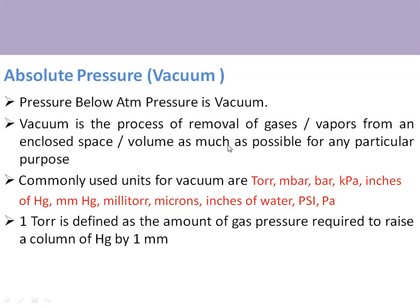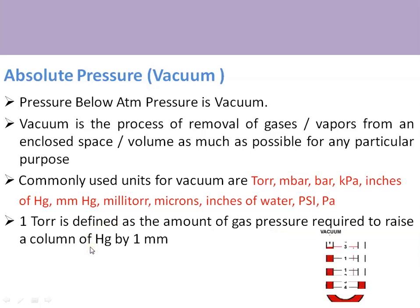Vacuum is the process of removal of gases or vapor from an enclosed space — such as containers, vessels, or furnaces — as much as possible for a particular purpose depending on the application. Commonly used units for vacuum are torr, millibar, bar, kilopascal, pascal, psi, and inches of water. The most commonly used unit is torr. One torr is defined as the amount of gas pressure required to raise a column of mercury by one millimeter, as seen in a U-tube manometer.